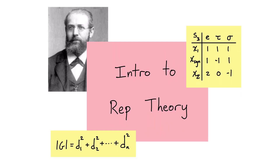In your first abstract algebra class where you learn about groups, you'll learn a group is a set with a binary operation satisfying some axioms, and then you'll use those axioms to deduce all sorts of interesting things. Representation theory is kind of a more indirect approach to studying groups. Instead of studying groups directly as sets with binary operations, we're going to think about how groups can act on vector spaces, and then use linear algebra to understand those actions. Because linear algebra is so powerful, it'll tell us a lot about the group that's acting.